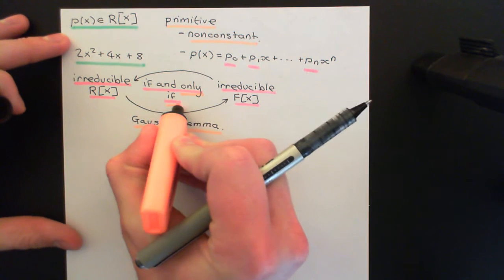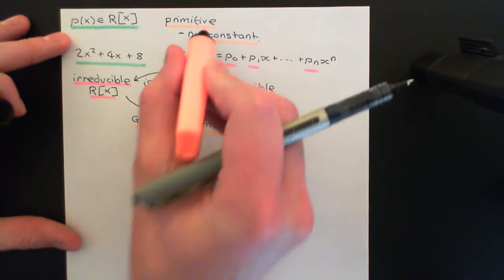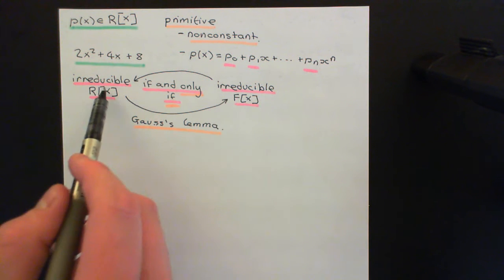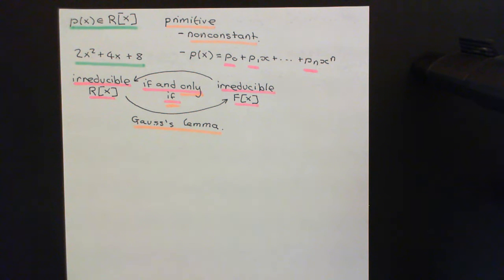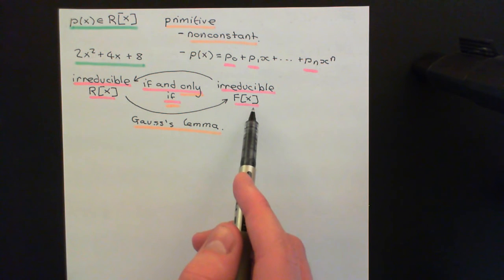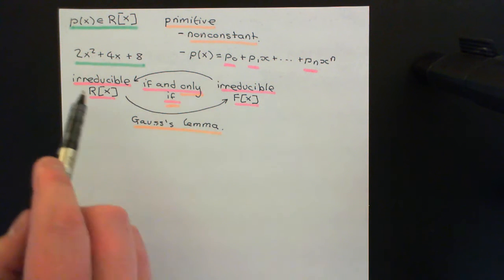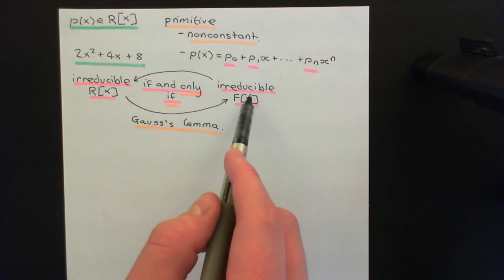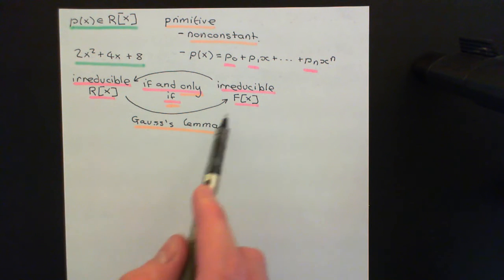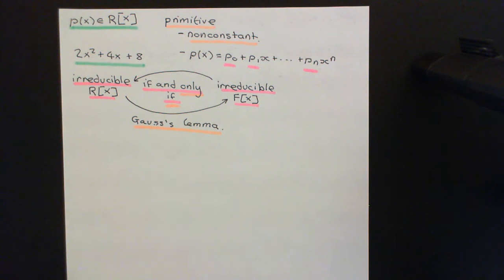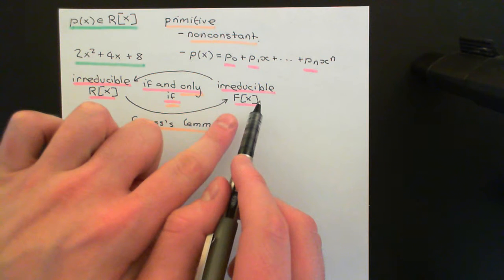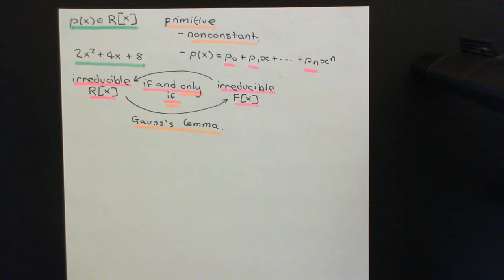Now we need to address the 'if' direction, and this is the part that requires primitivity. We want to show that if P(x) is irreducible in F[x], it is irreducible in R[x]. The easiest way is to prove the contrapositive: if P(x) is reducible in R[x], then it is reducible in F[x]. If that's true, then irreducibility in F[x] forces irreducibility in R[x].